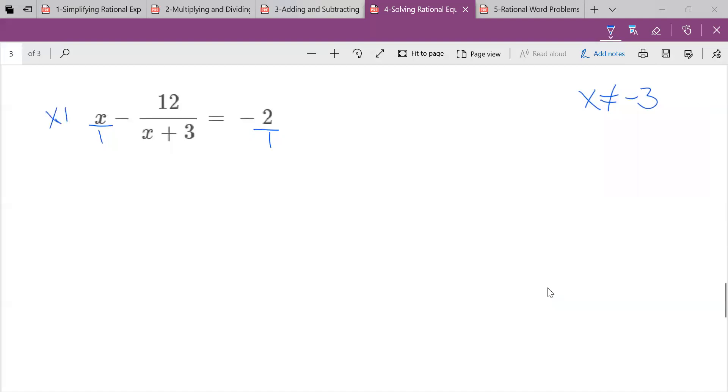So I'm going to multiply everything. Not everything, but the first term and the last term by X plus 3. Like that. Okay. Then I write everything with my common denominator. Just like that.